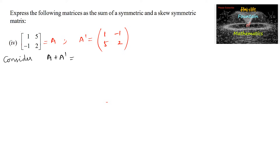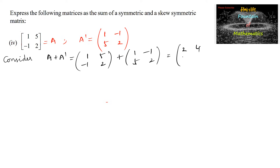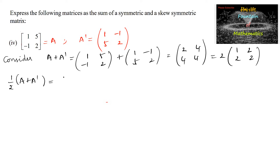Consider A plus A transpose: [1,5;-1,2] + [1,-1;5,2] = [1+1, 5+(-1); -1+5, 2+2] = [2,4;4,4]. Taking 2 as common, 1/2 times of A plus A transpose equals [1,2;2,2].